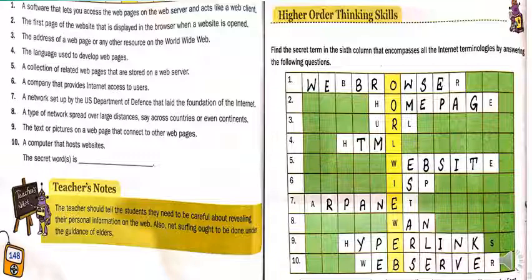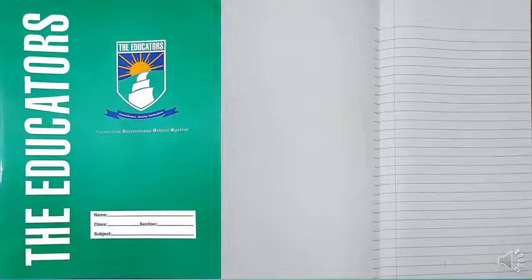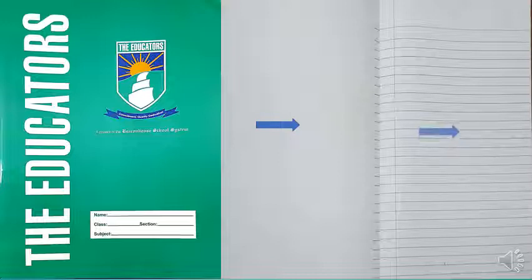I hope each and everything regarding this lesson is clear to you. Please solve the puzzle in your books. Now let's start today's notebook work. Open your computer notebook — one side is blank and the other is lined. On the blank page, make the title page of chapter seven, the internet. On the lined page, do your classwork.